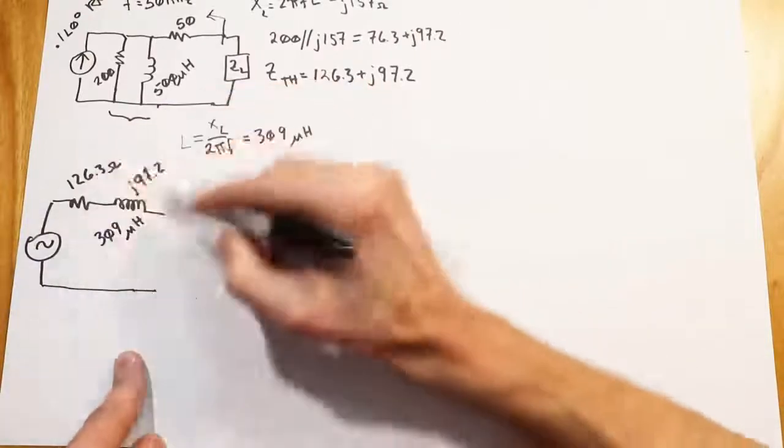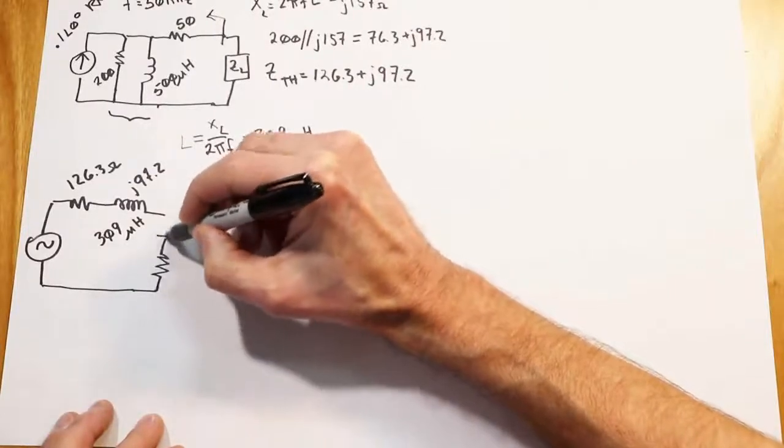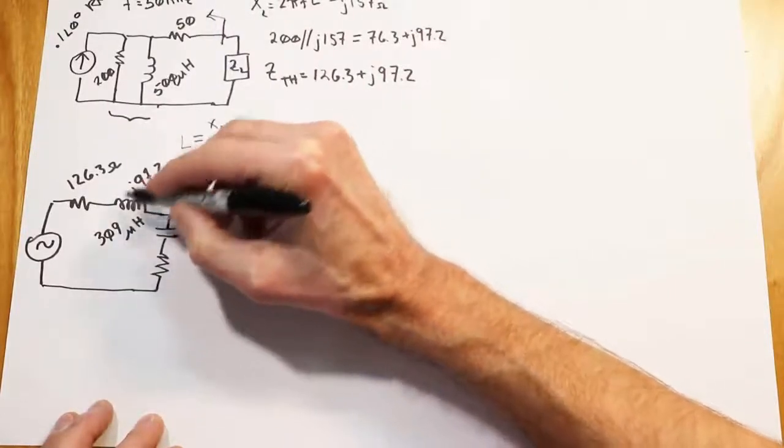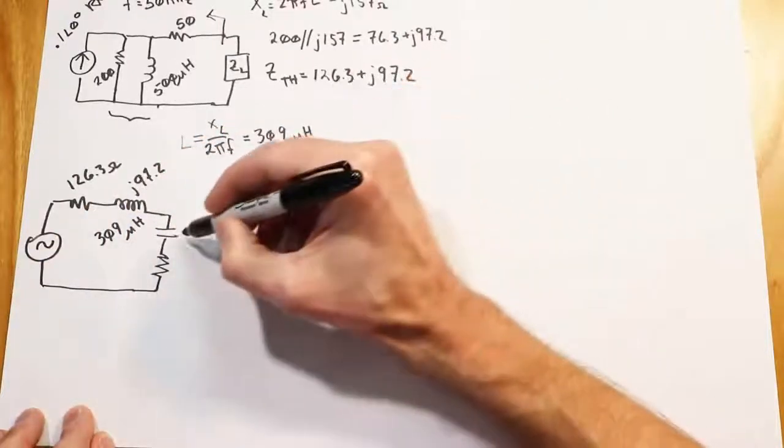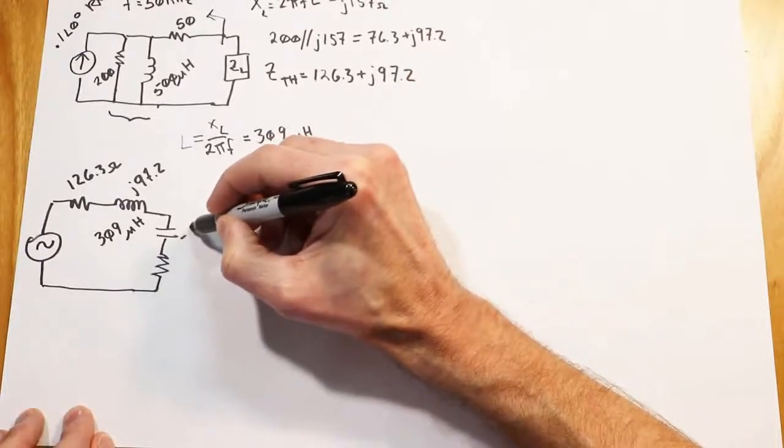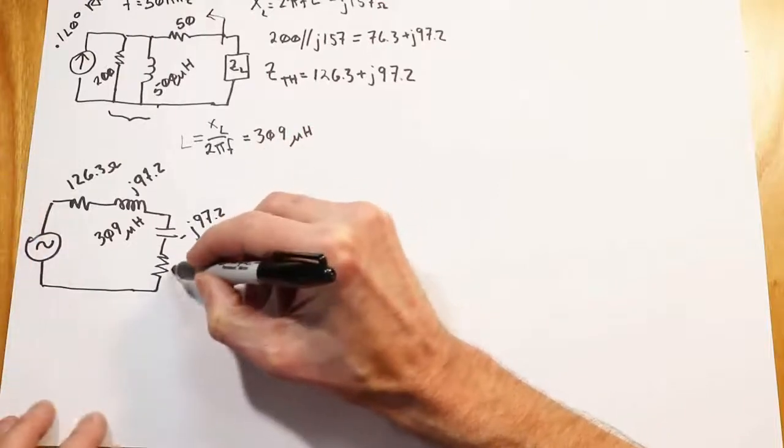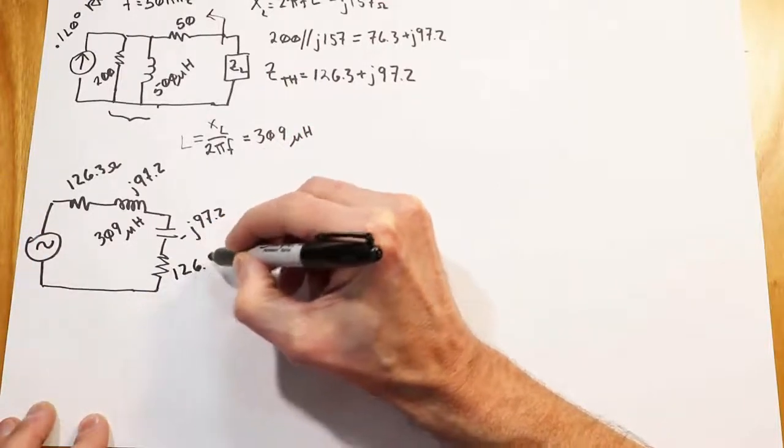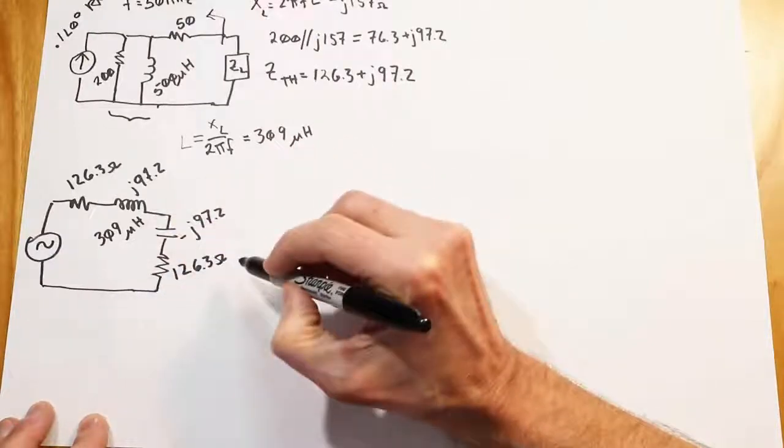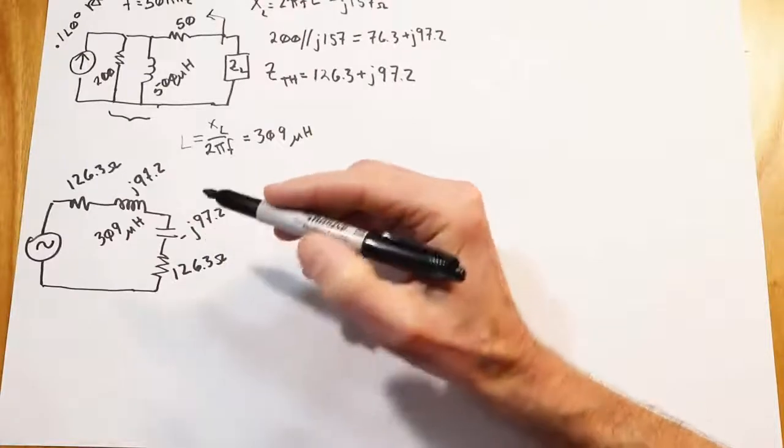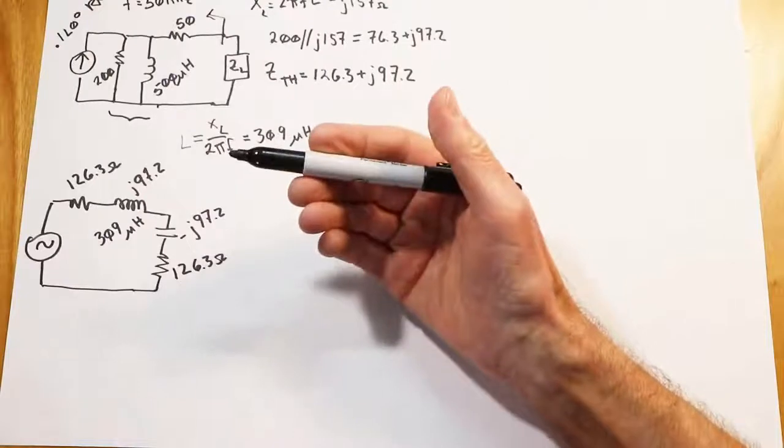Now, this form is such that we know we're going to need a capacitor here. I want the magnitudes of the inductive reactance and capacitive reactance to be the same. Opposite signs, obviously. So it's going to be a minus J97.2. And then the resistive parts will be the same. So this impedance right here, if this is my ZL, 126.3 minus J97.2, that will get us the maximum load power. So far so good.